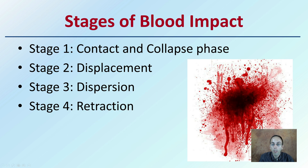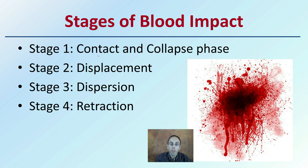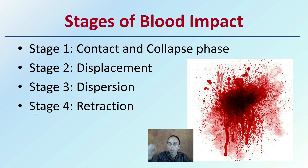There are different stages of blood impact. We have stage one, the contact and collapse phase; the displacement phase; and the dispersion and retraction phase. This describes how the blood drop comes into contact with the surface, and how it does so can provide information to investigators.